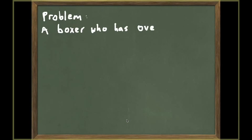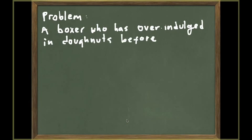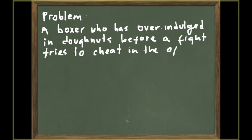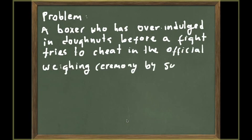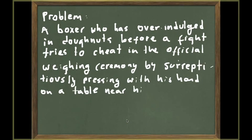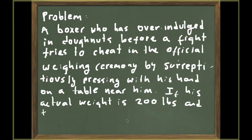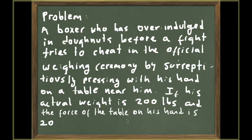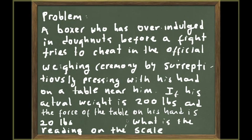So the problem I want to propose is a boxer who has overindulged in donuts right before his fight. When he is in the weighing ceremony, where they make sure the boxers have the weight required to fight in that category, he suspects his weight is going to be over the limit. What he does is surreptitiously press with his hand on a nearby table. If his actual weight is 200 pounds and the force of the table on his hand is 20 pounds, then what is the reading on the scale?